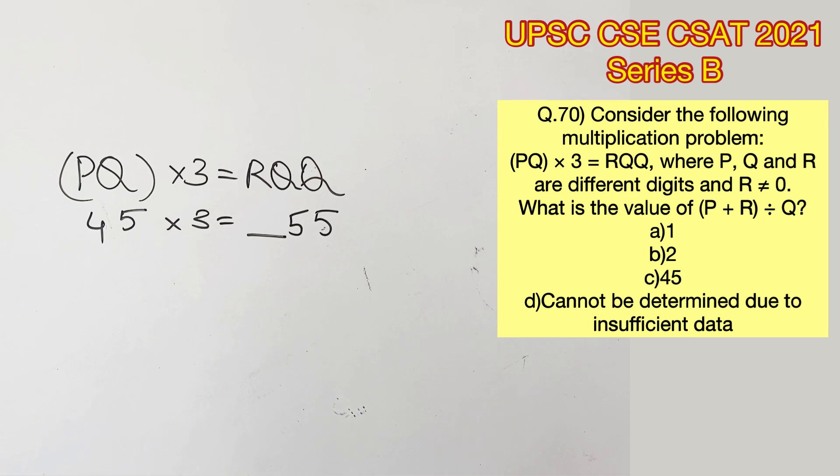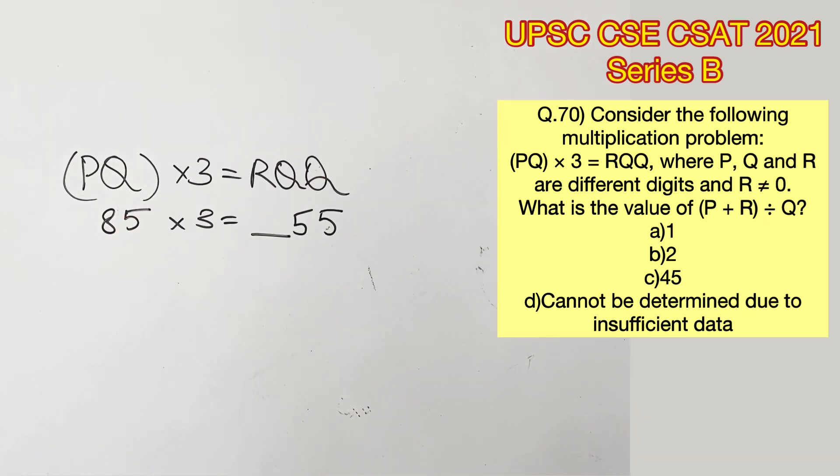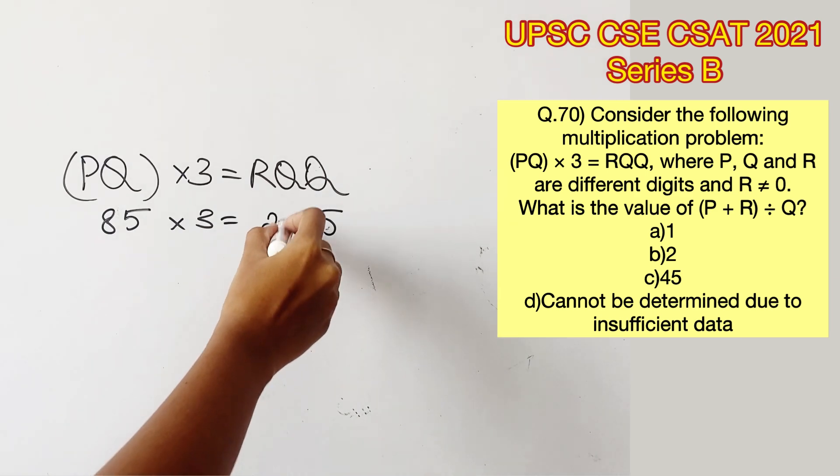45 into 3 will give us 135. 55 into 3 will give us 165. 65 into 3 will give us 195. 75 into 3 will give us 225. 85 into 3 will give us 255.